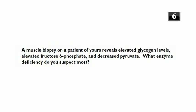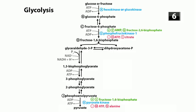A muscle biopsy reveals elevated glycogen levels, elevated fructose-6-phosphate, and decreased pyruvate. Because pyruvate is decreased and glucose is being stored as glycogen, there's a problem with glycolysis. The elevated level of fructose-6-phosphate suggests a deficiency of the enzyme that converts fructose-6-phosphate to the next substrate - and that enzyme is PFK1. So this is a deficiency of PFK1.